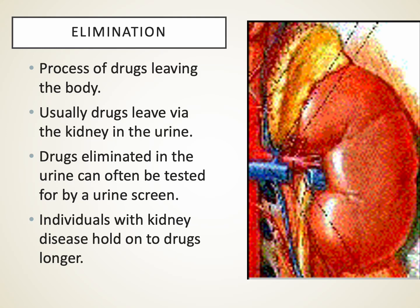We've talked so far about drug absorption, drug distribution, and drug metabolism. Finally, let's talk about drug elimination. When we think about drug elimination, there are a number of ways that drugs can get out of the body, but by far the most common is in the urine via the kidney.